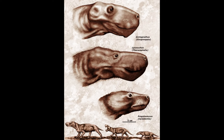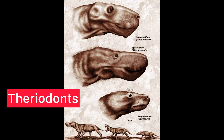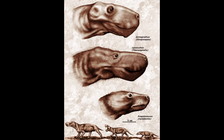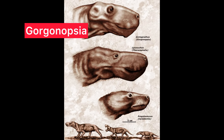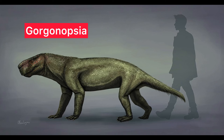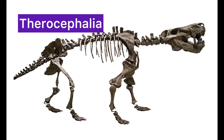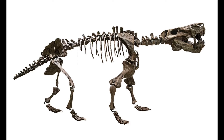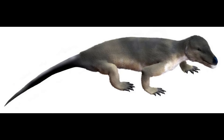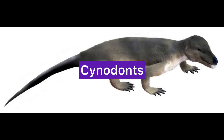Theriodonts were a more diverse and advanced group of therapsids, including Gorgonopsia, Therocephalia, and Cynodontia. Gorgonopsians were apex predators of the late Permian, with large saber-like teeth and powerful jaws — Gorgonops being one of the best-known genera. Therocephalians were smaller, more agile therapsids exhibiting further mammal-like traits such as a secondary palate, which allowed them to eat and breathe simultaneously — crucial for sustaining high metabolic rates and likely contributing to the evolution of endothermy in later mammals.